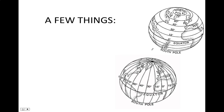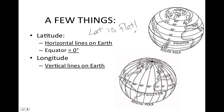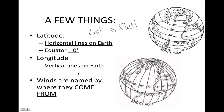Two quick reminders. First, latitude lines are horizontal — the old saying is "lat is flat." The vertical lines are longitude, and in this case we are not overly concerned with the longitude lines. Second, winds are always named from where they come from, not where they are going. Keep both of these things in mind as we go through the video.